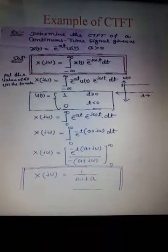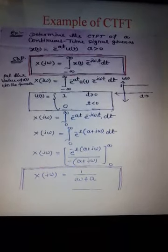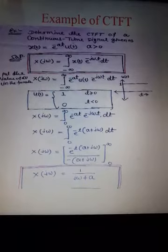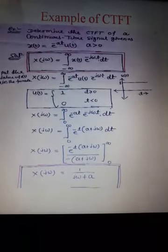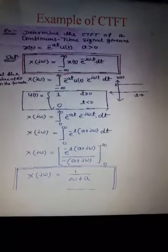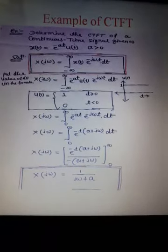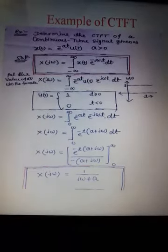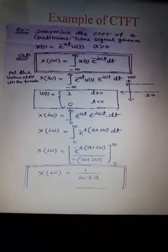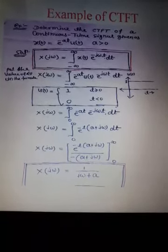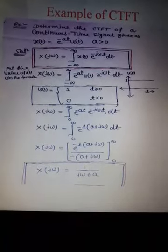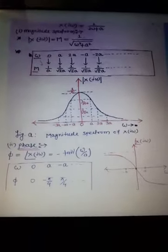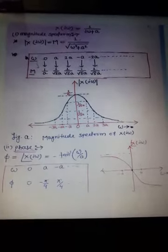Now applying the definition of the Fourier transform: X(jω) = integration from minus infinity to infinity of x(t) e^(−jωt) dt. Substituting x(t) = e^(−at) u(t), and removing the unit step function, the limits become 0 to infinity. Solving the integration, we obtain X(jω) = 1/(a + jω). Therefore, the CTFT of e^(−at) u(t) equals 1/(jω + a).